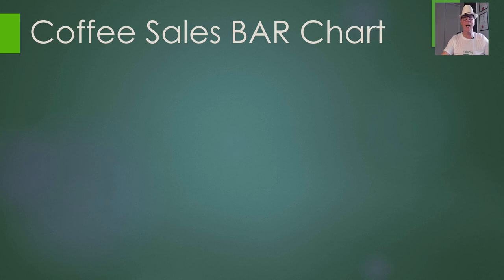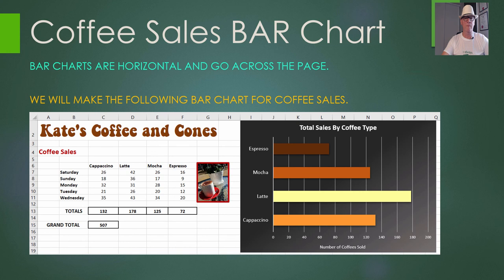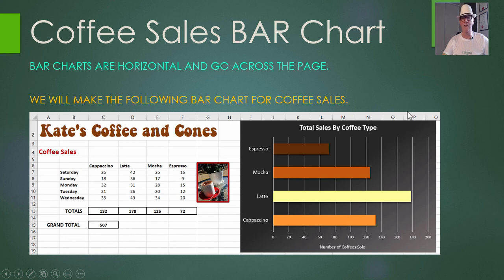So the coffee sales bar chart is the first one we're going to look at. Bar charts are horizontal and go across the page. We have a spreadsheet with some coffee sales — cappuccino, latte, mocha, and espresso — and the weekly totals. We're going to make a nice bar chart in coffee colors with a gradient background and change the scale across the bottom from what Excel chooses.